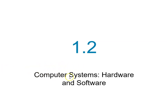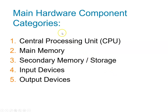Any computing unit that you look at will have hardware and software, so we're going to look at computer systems, hardware and software. First let's look at hardware. The main hardware component categories apply to any computing unit — whether it's a phone, a microwave, or a camera — they all have these hardware components if it has a computing unit in it.